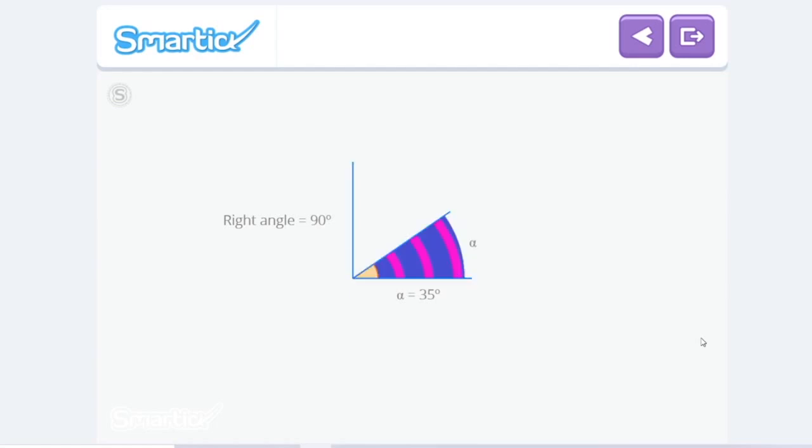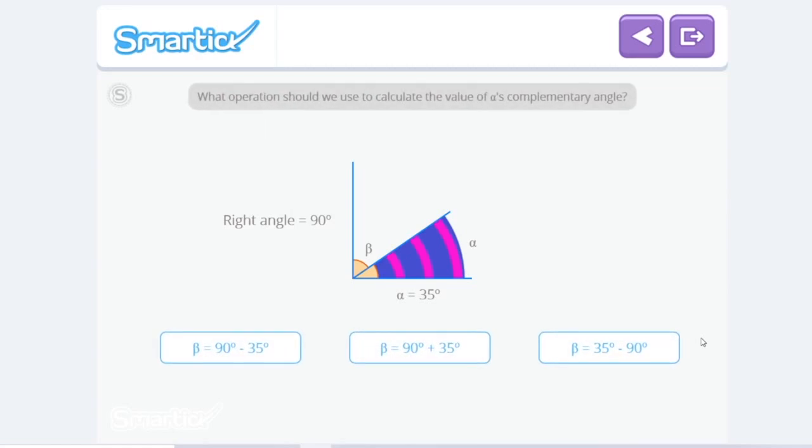We know that together they have to add up to 90 degrees, and that one of them, alpha, measures 35 degrees. The other, which we will call beta, corresponds to the angle missing in order for alpha and beta, when added together, to make a right angle. What operation should we use to calculate the value of alpha's complementary angle? So we know that alpha and beta equal 90 degrees. So in order to find what beta equals, we would just have to subtract alpha from 90 degrees.